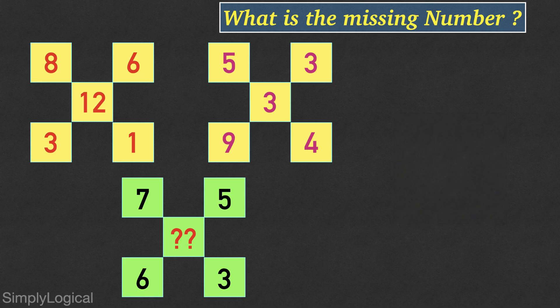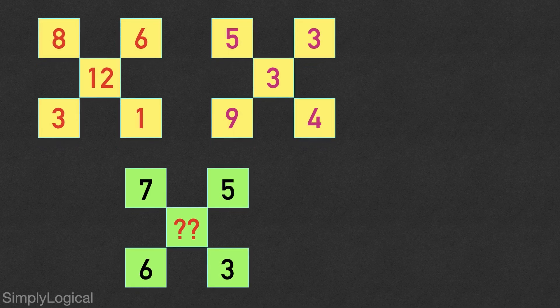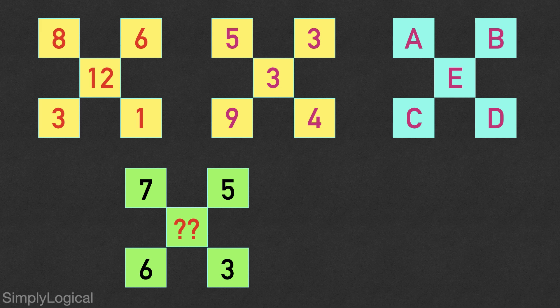Let me explain the solution now. For convenience sake, let's name numbers associated in the outer squares as A, B, C, D and the number in the inside square is E.